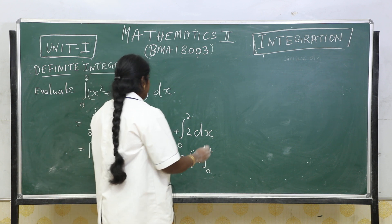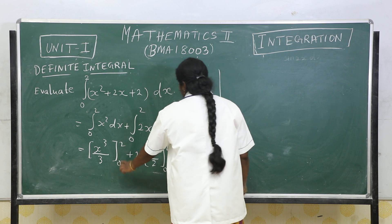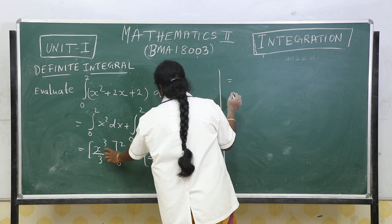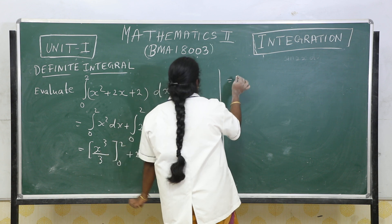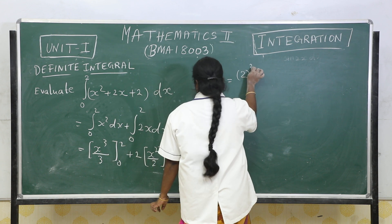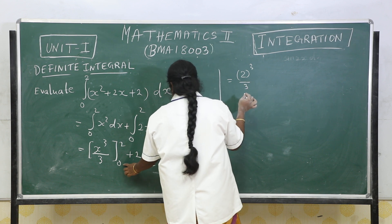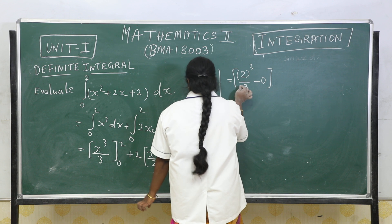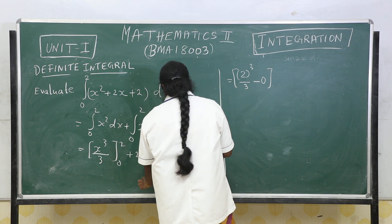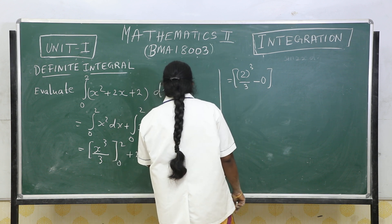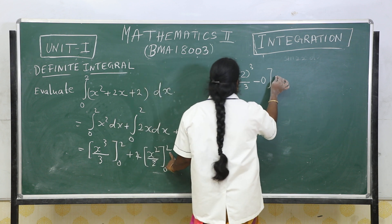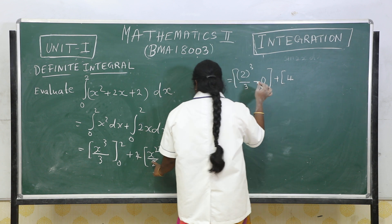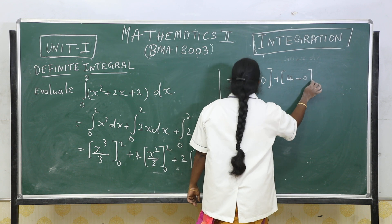Apply the upper limit minus lower limit. For the first term: upper limit gives 2 cubed divided by 3, minus lower limit 0. For the second term: 2 squared equals 4, minus lower limit 0, giving 4. For the third term: upper limit 2 minus lower limit 0, giving 2.